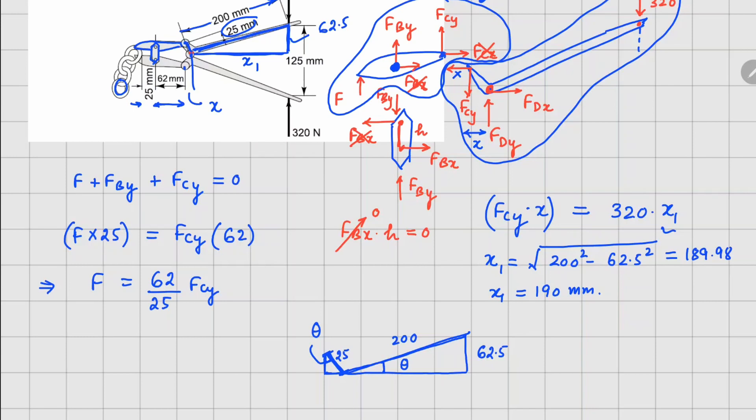What we are interested in is this horizontal distance x. Using similar triangles if I write sine theta from the bigger triangle, I can write 62.5 divided by 200, and from the smaller triangle it's going to be x divided by 25. So this gives us x equals to 7.81 millimeters.